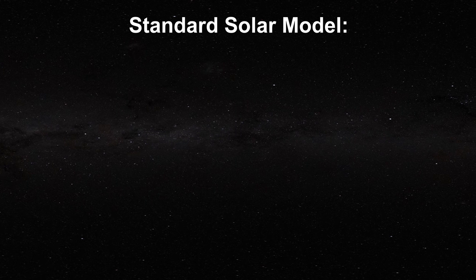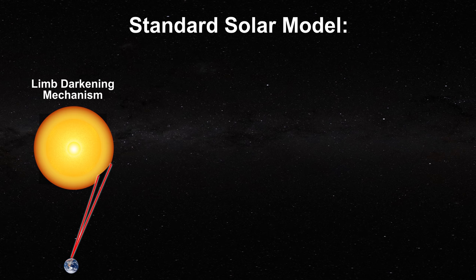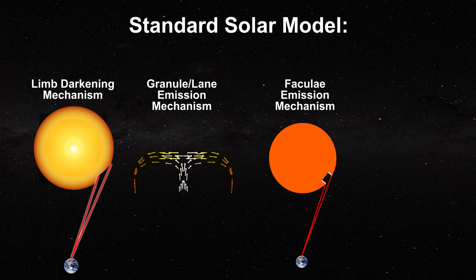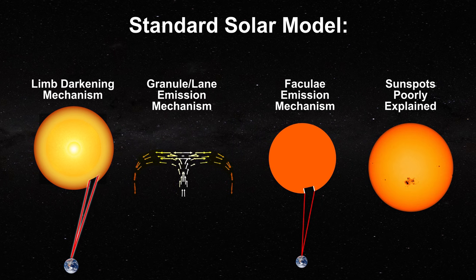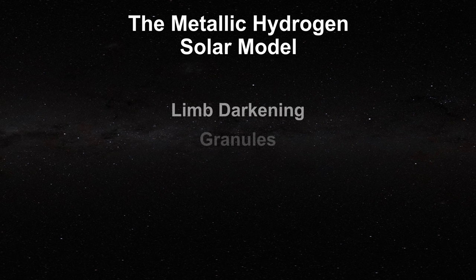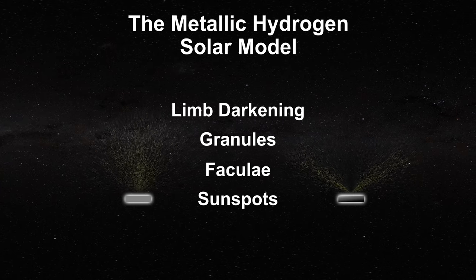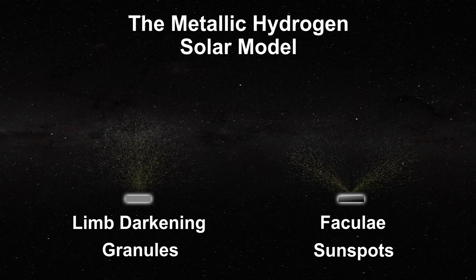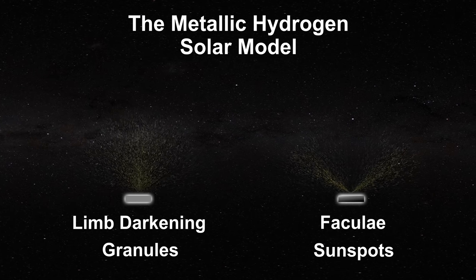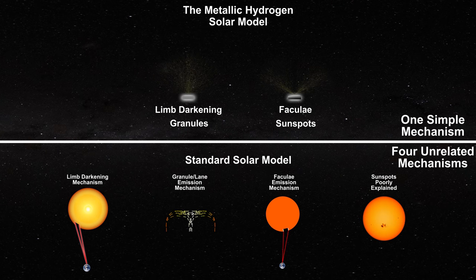I would like to finish with Occam's razor. The standard solar model explains these phenomena by claiming we can look deeper into the Sun at different angles using temperature differences, fictional walls and floors in a gaseous object, and mysteriously dark yet deep sunspots. The metallic hydrogen model explains all of these things with one mechanism: semi-metals and metals changing emissivity with viewing angle. In addition, the magnetic activity of the Sun verifies the magnetic behavior of Type 2 hydrogen in faculae and sunspots. Which of these two models is more reasonable?